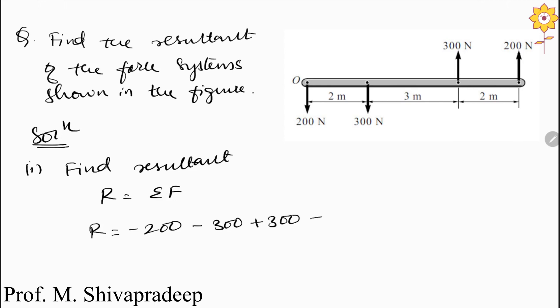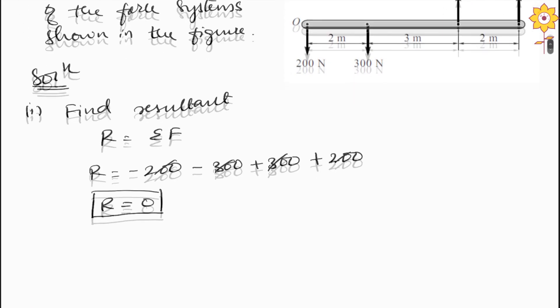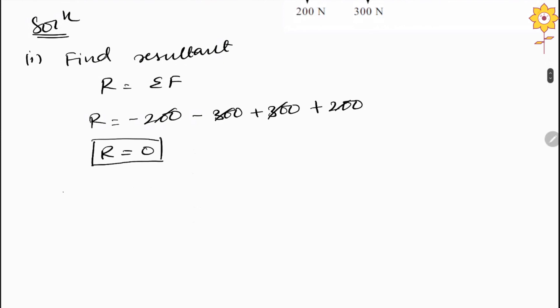The last force, 200, is acting upward so it is also positive. Every force is getting cancelled out: minus 200 plus 200, minus 300 plus 300. So we are getting the resultant as 0. This means we do not have a resultant force, but since R is equal to 0, the resultant may be a couple.